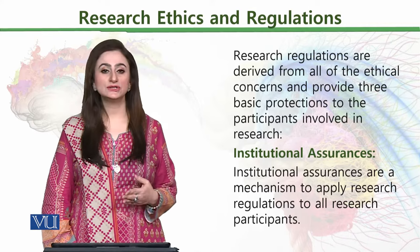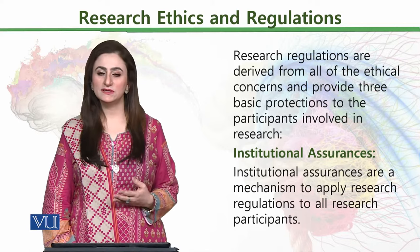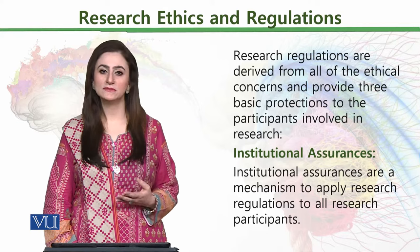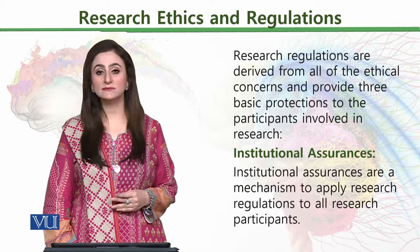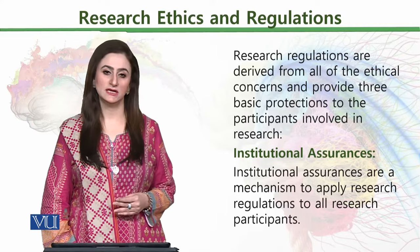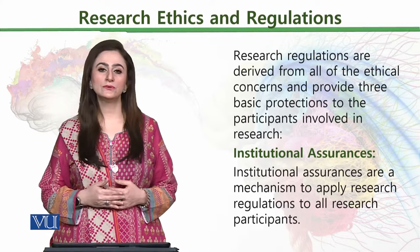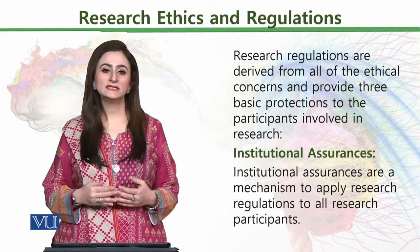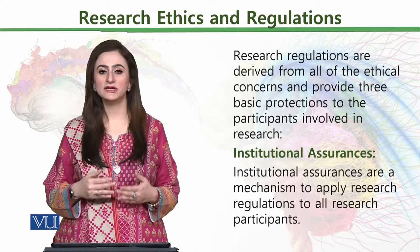The first protection is institutional assurances. An institution could be any place where the research is primarily being conducted and sampling is taking place. Institutional assurances are a mechanism to apply research regulations to all research participants. An institution could be any hospital, university, school, or any such organization from where we are going to see the sampling frame.